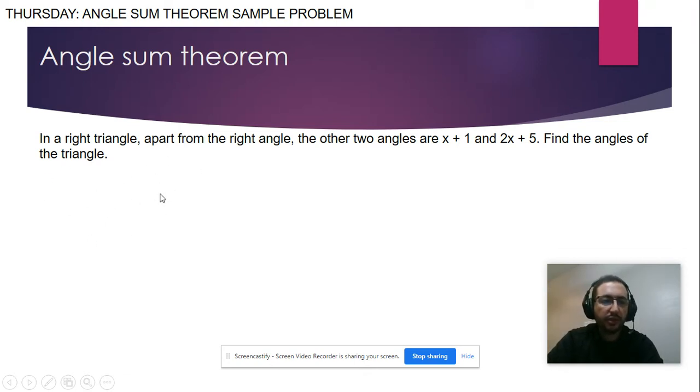First we need to draw our triangle so it will be easier to solve. We got my right triangle. This is 90 degrees, and there are two angles: one will be x plus 1 and the other one will be 2x plus 5.